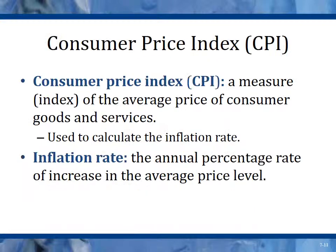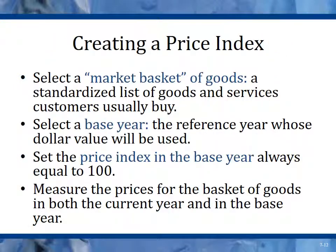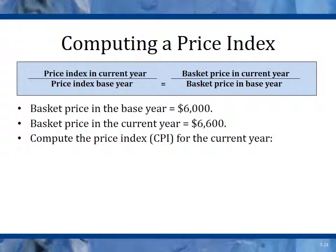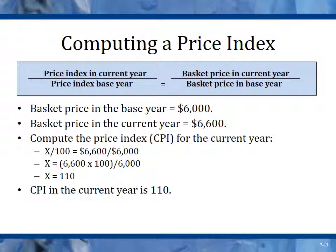Consumer price index is covered in the video lecture so I'll go through this quickly. It's a measure of the average price of consumer goods and services and is basically considered the inflation rate — the average increase in prices of goods. They select a market basket of goods, select a base year (currently 2005), and set the price index at 100 for that base year. Our distance from that 100 — the amount we've increased to buy that basket of goods — is our inflation rate.